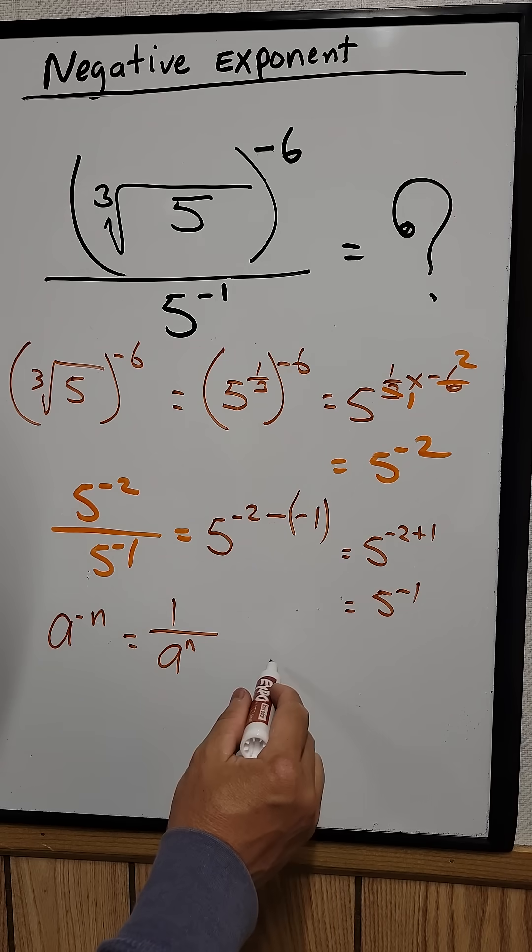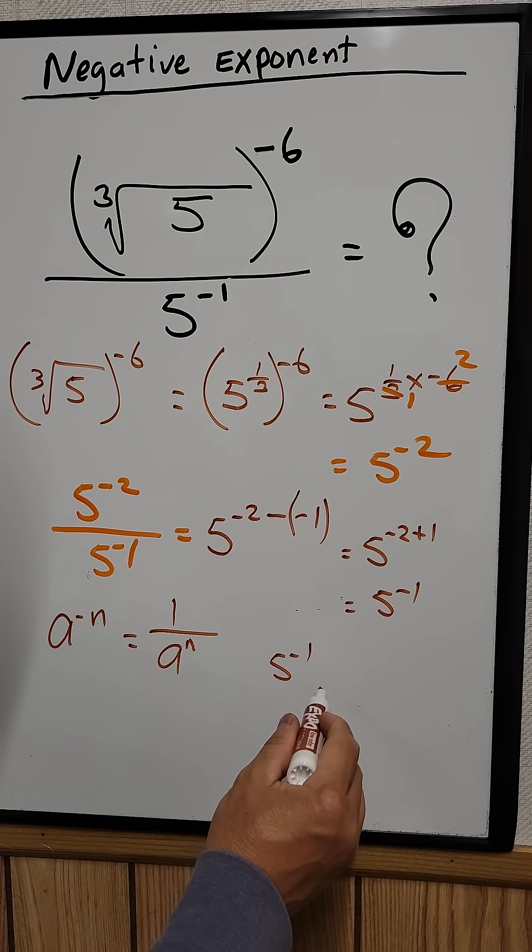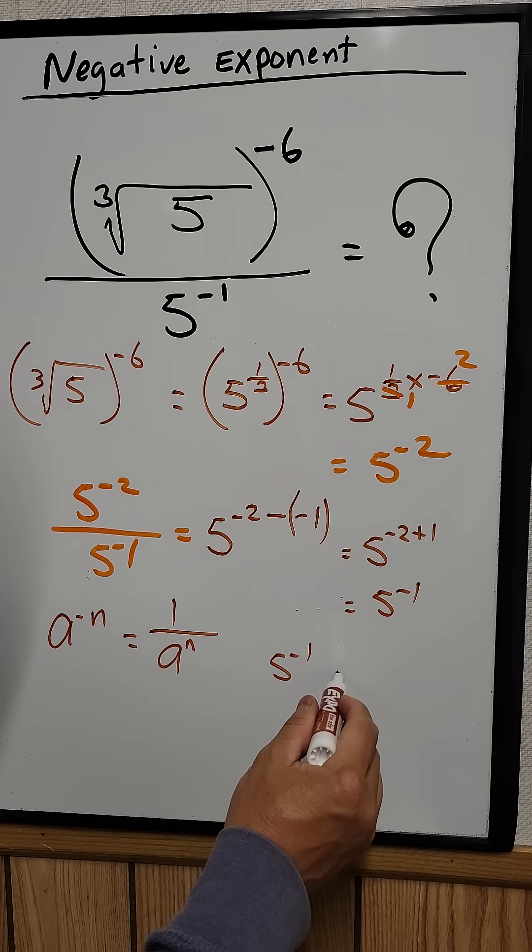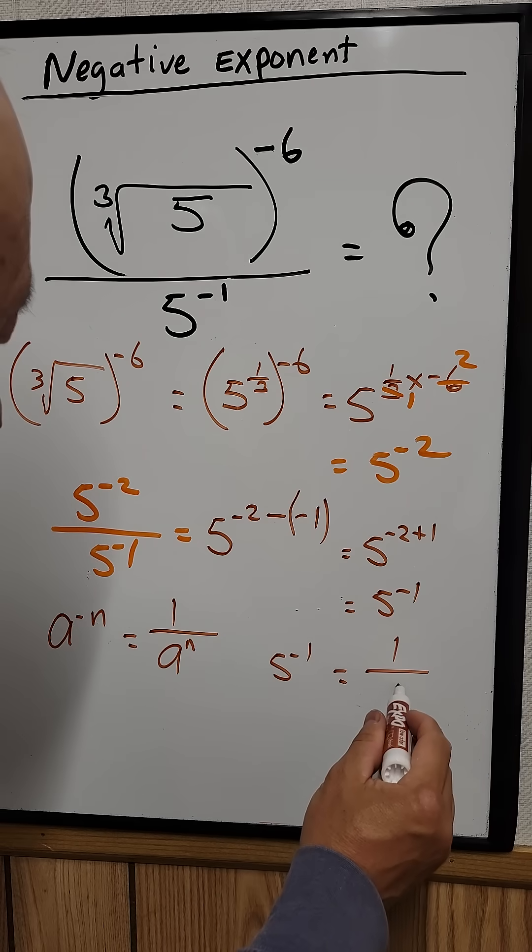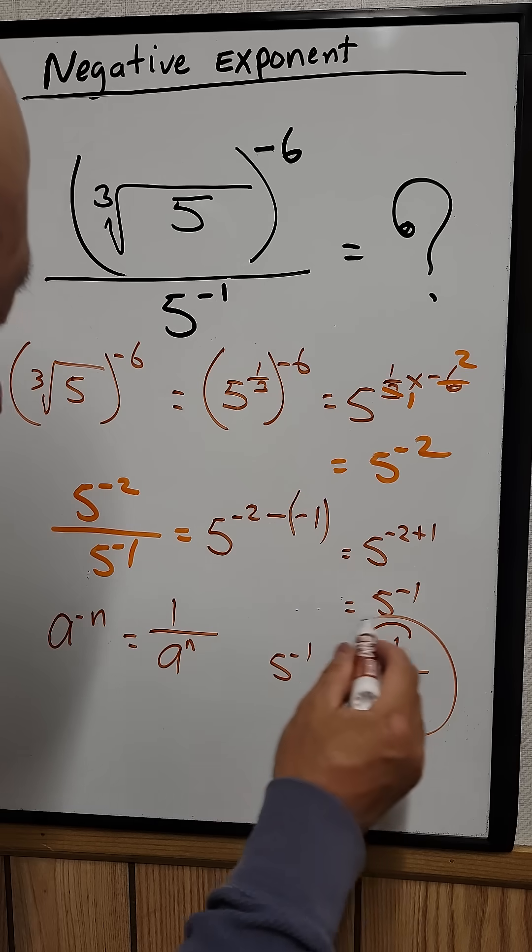So this we can rewrite that as a negative 1. I mean, 5 to the negative 1 is just equal to 1 over 5. So that's your answer.